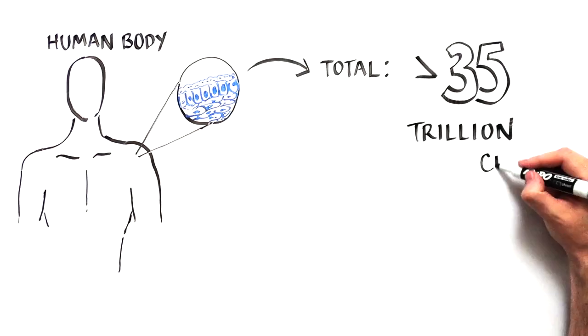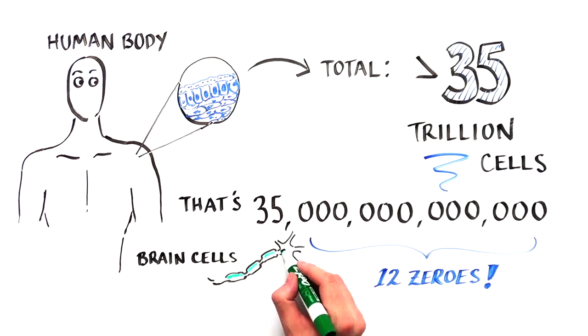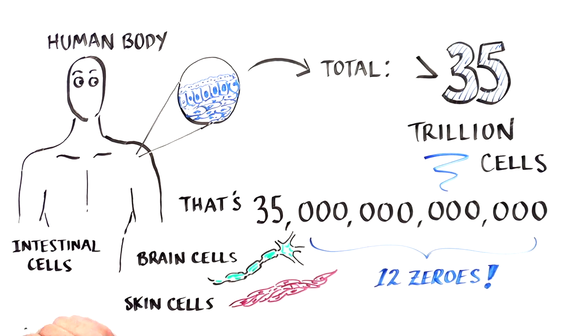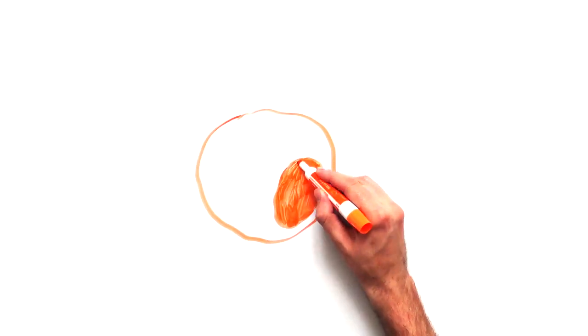We are made up of more than 35 trillion cells. Whoa! They have their differences - some are brain cells, some are skin cells, others are intestinal cells. But despite these differences, they have a common lineage since they all came from one single cell.